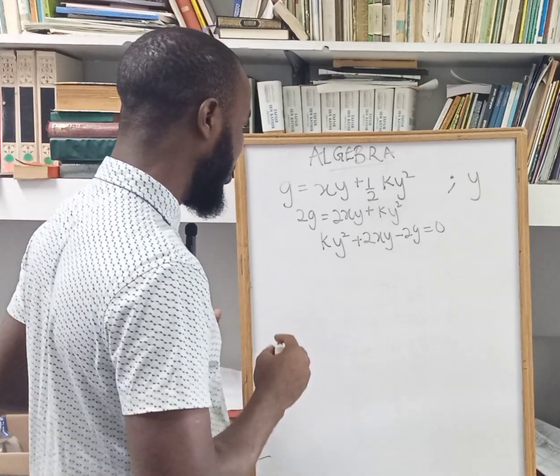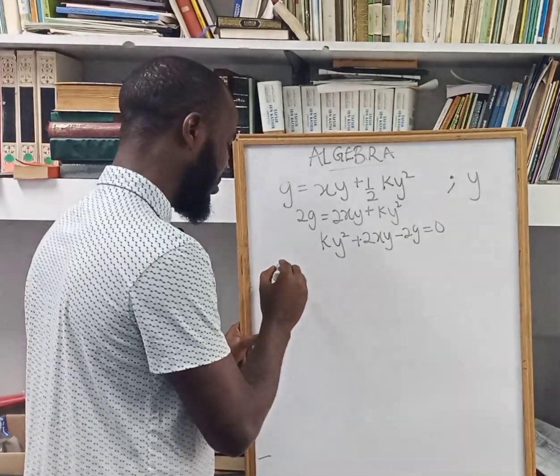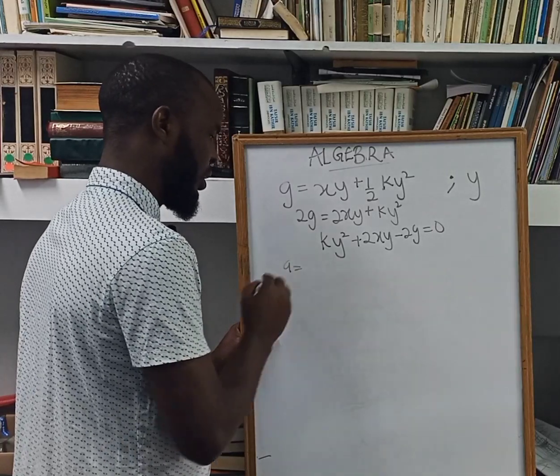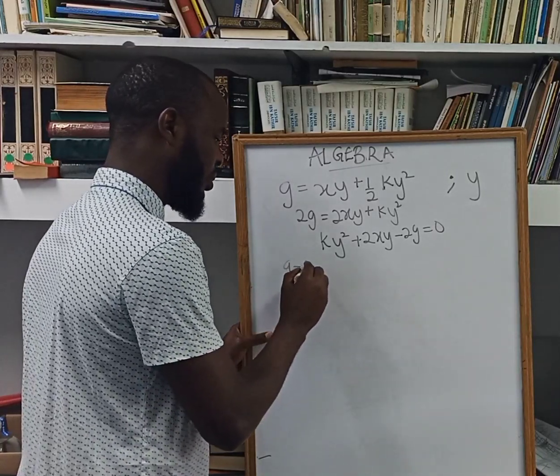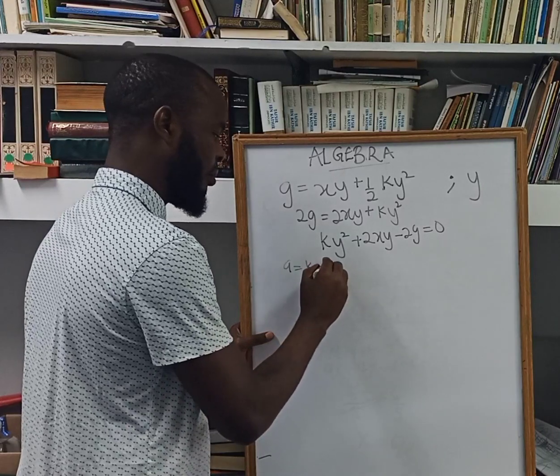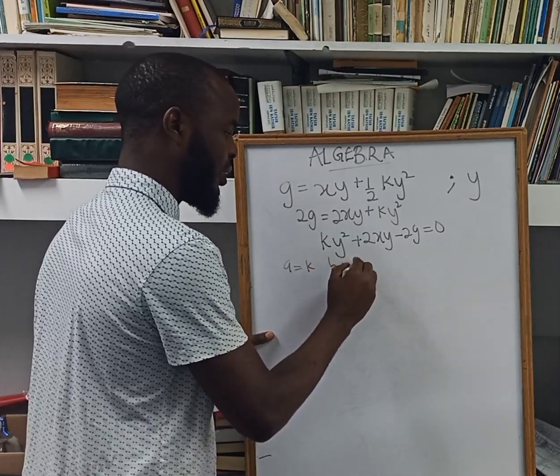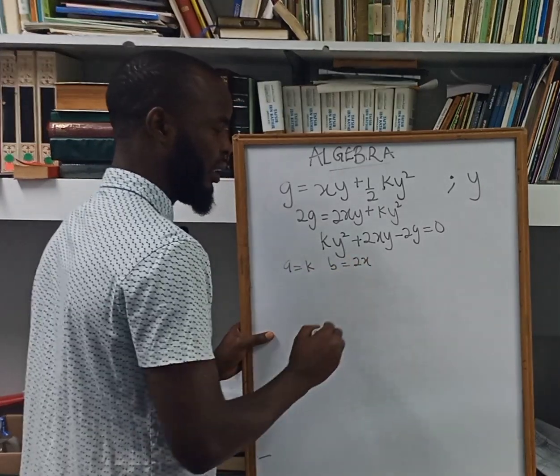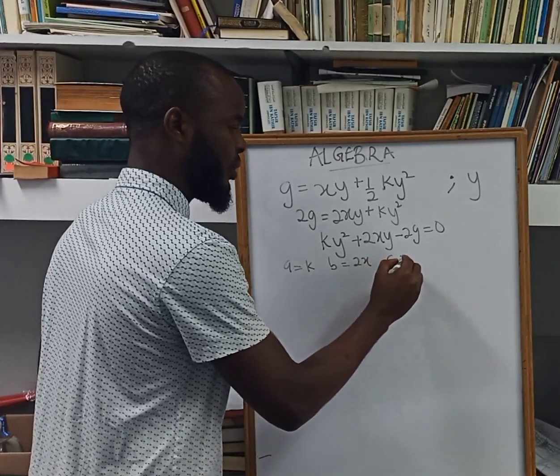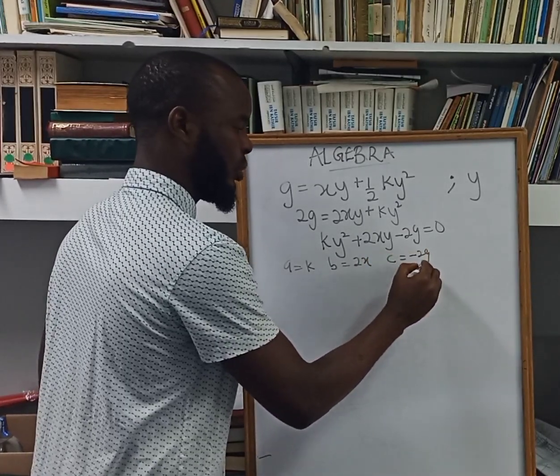So to break it down here, we're going to have that my a, which is the coefficient of y squared, is going to be k. My b, which is the coefficient of y, is going to be 2x. And finally, c is going to be negative 2g.